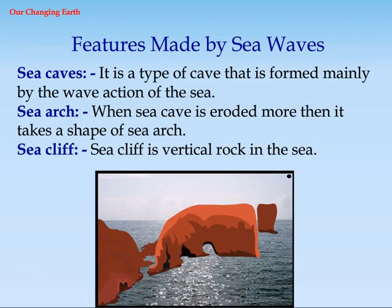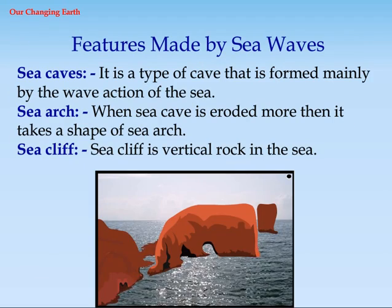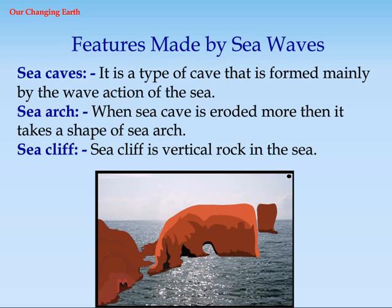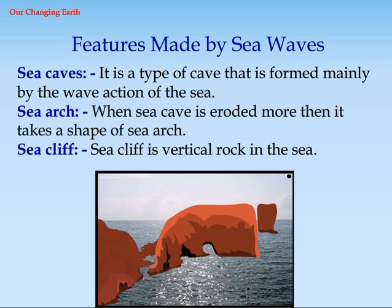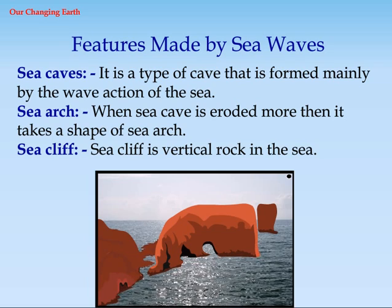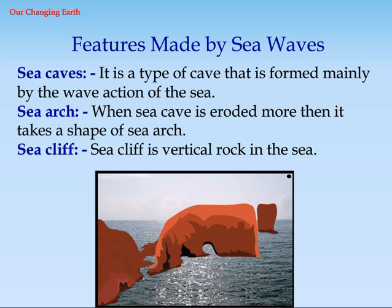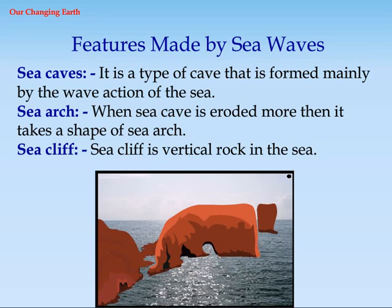Features made by sea waves — Sea cave: A type of cave formed mainly by the wave action of the sea. Sea arch: When a sea cave is eroded further, it takes the shape of a sea arch. Sea cliff: A sea cliff is a vertical rock face in the sea.